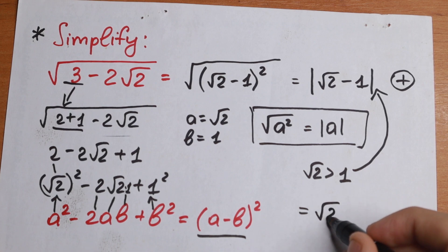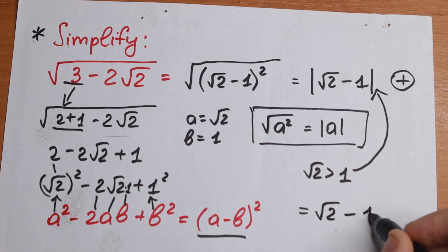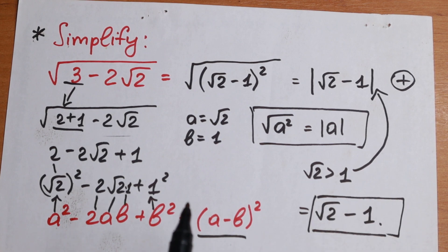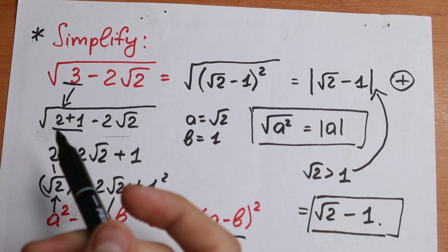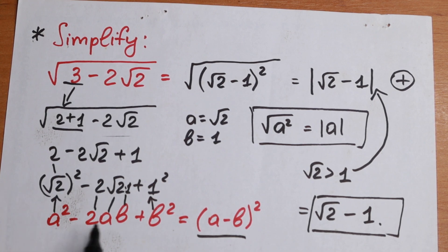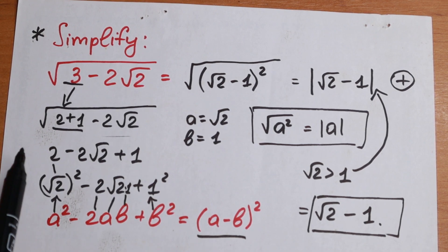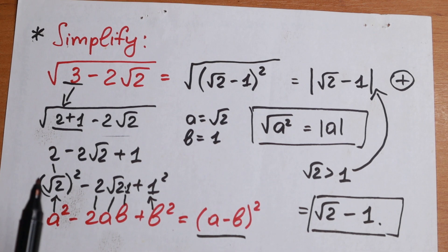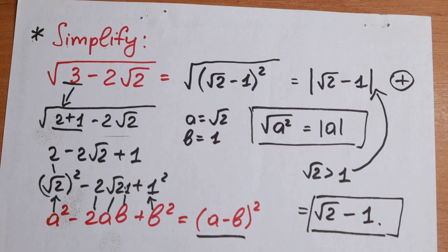So our final answer is square root of 2 minus 1. Really a nice math problem! If you understood each step, write a comment. If you didn't understand why I simplified it this way, feel free to ask. I hope you enjoyed it — thank you so much for watching and see you in the next video!